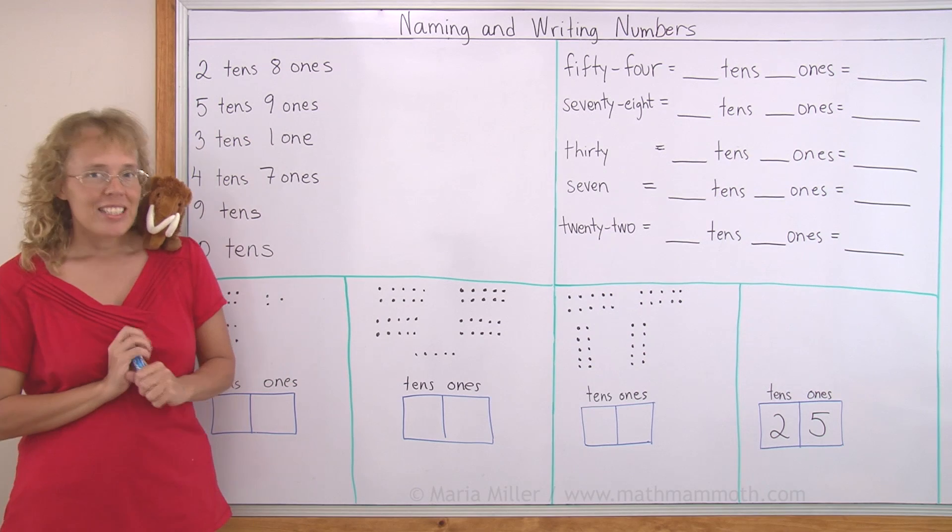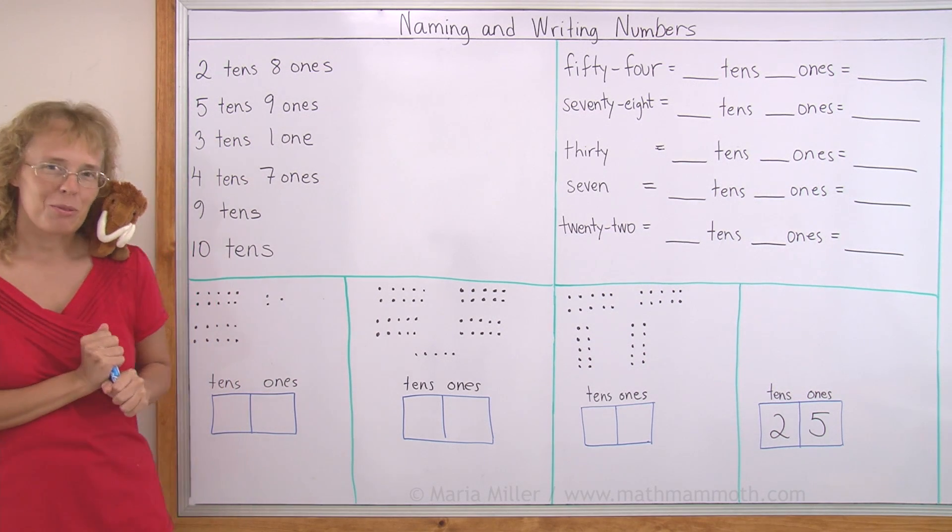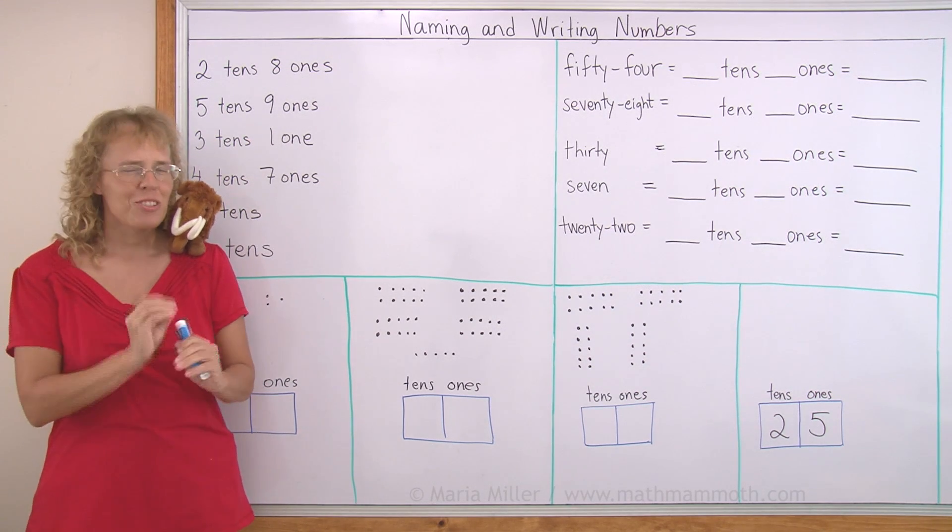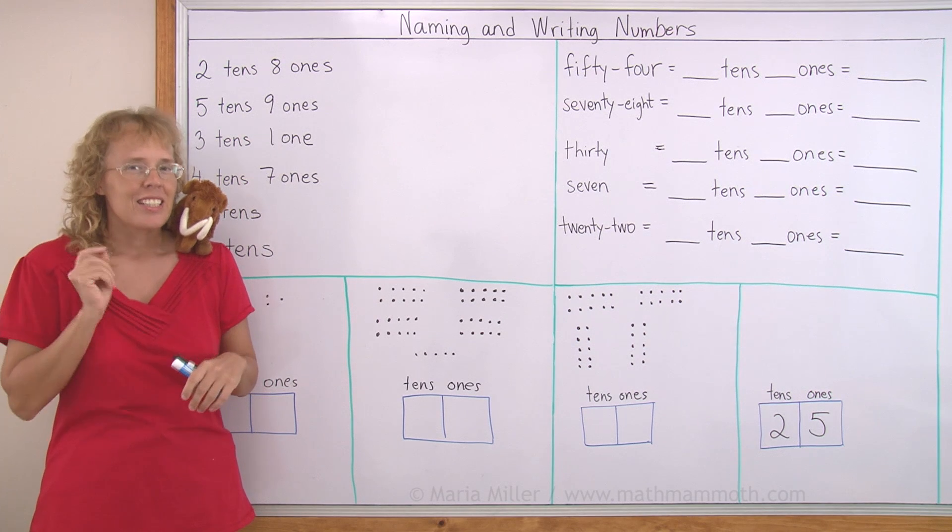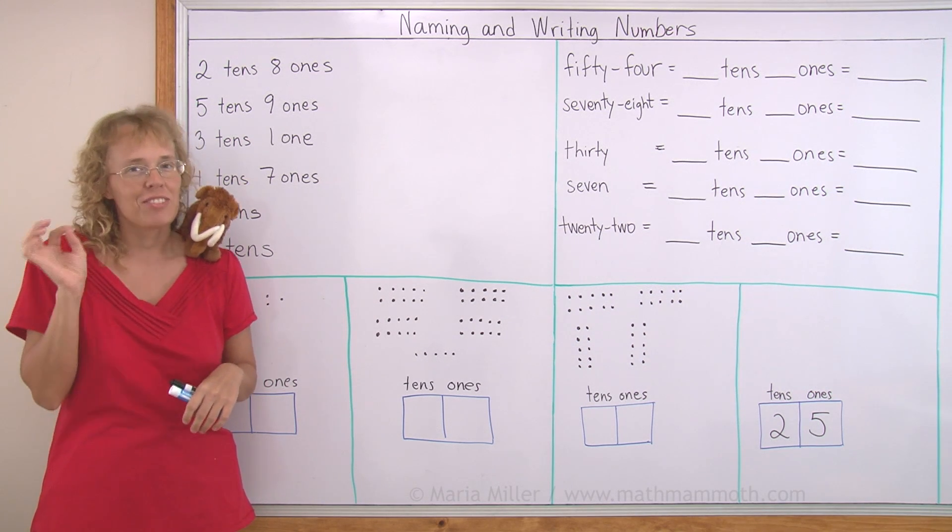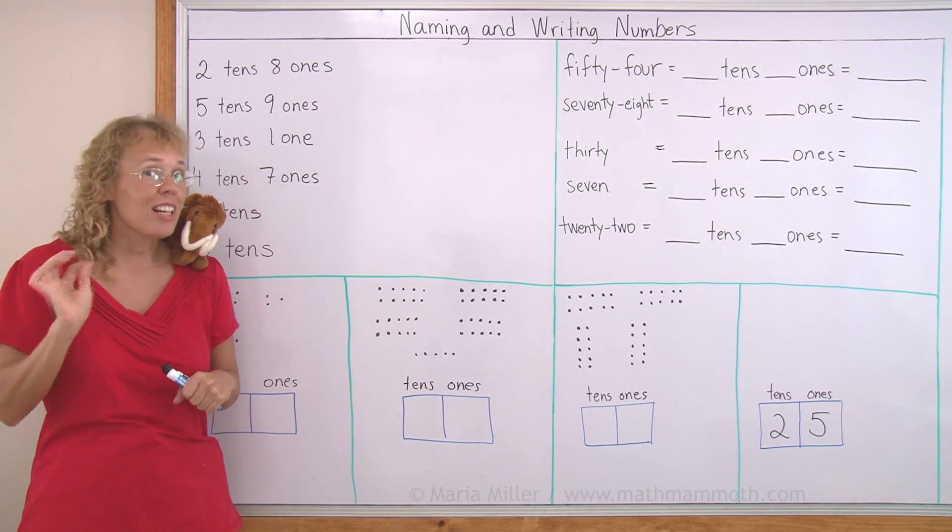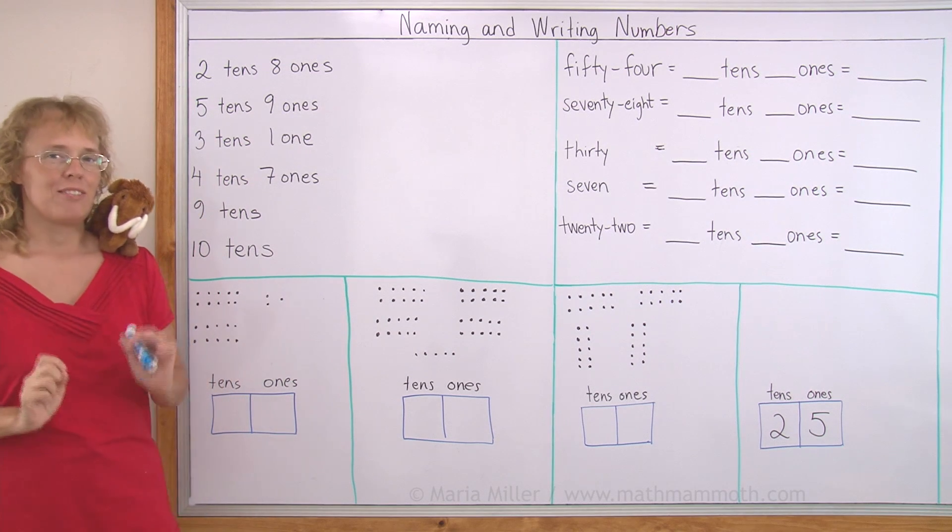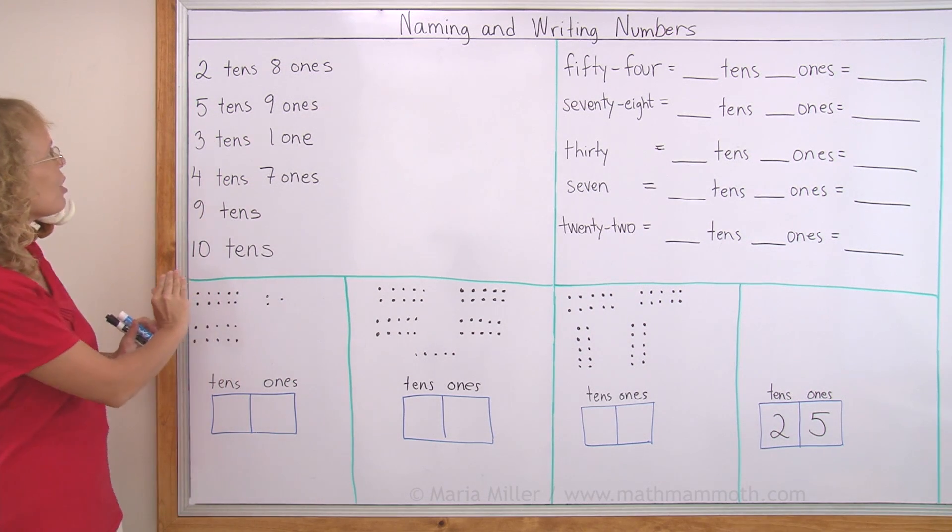In my last lesson you learned names for the whole tens. Do you remember that little rhyme? 10, 20, 30, 40, 50, 60, 70, 80, 90 and 100. You need to remember that very well because now we're going to use it.